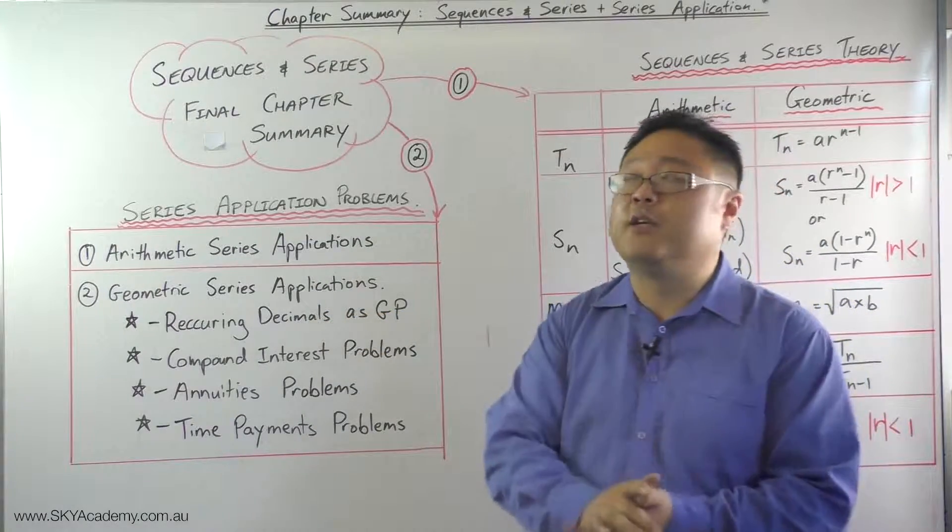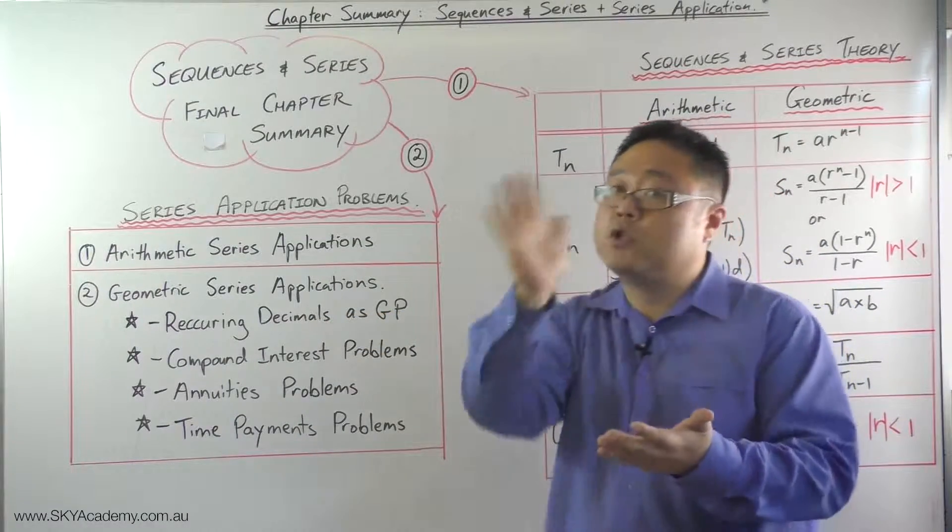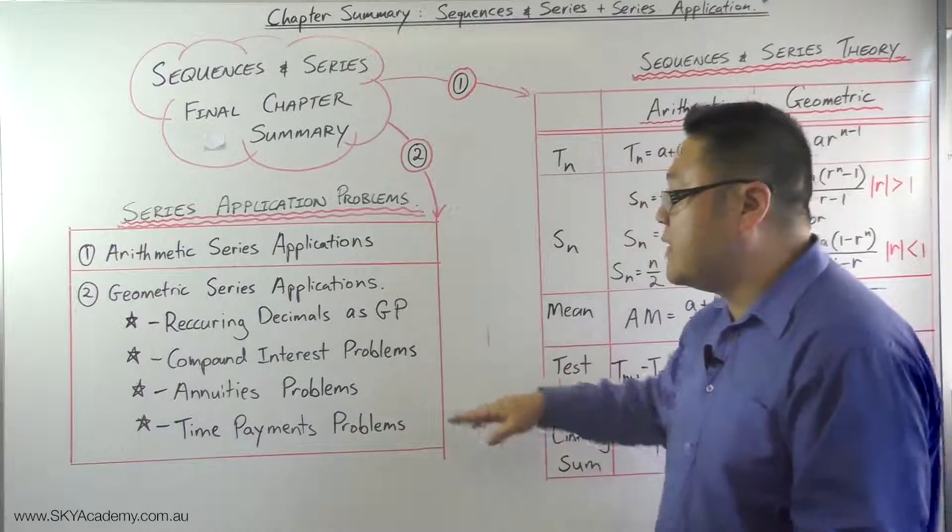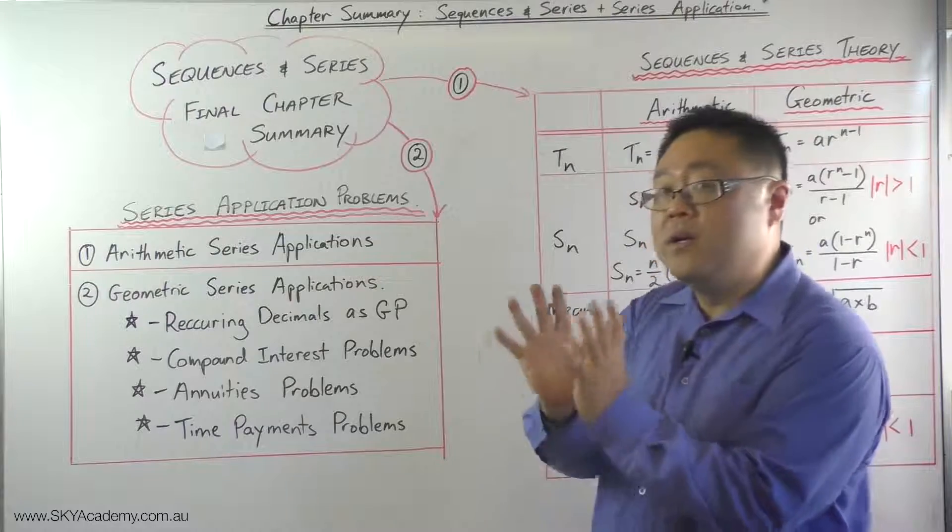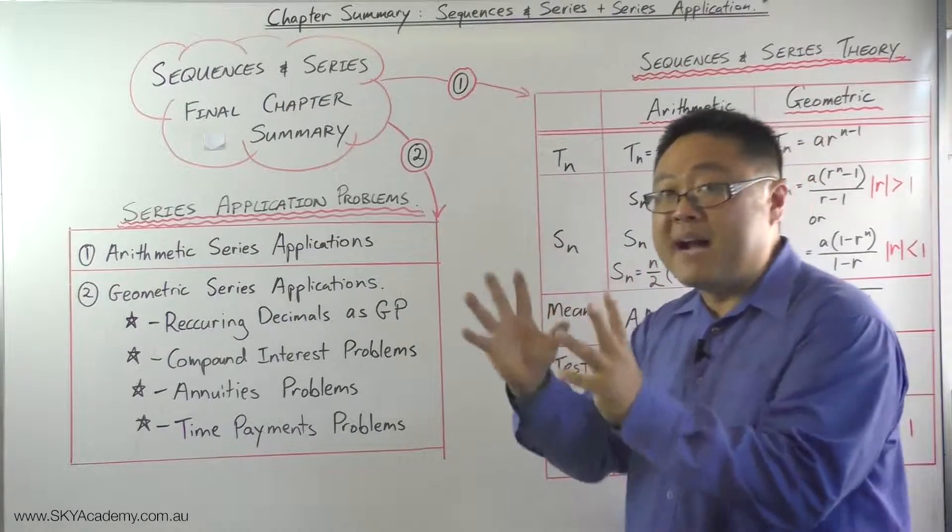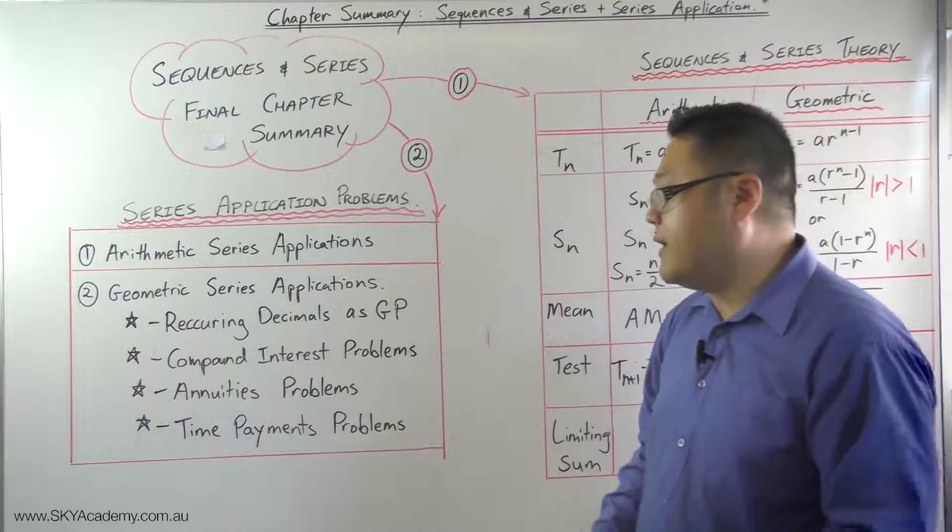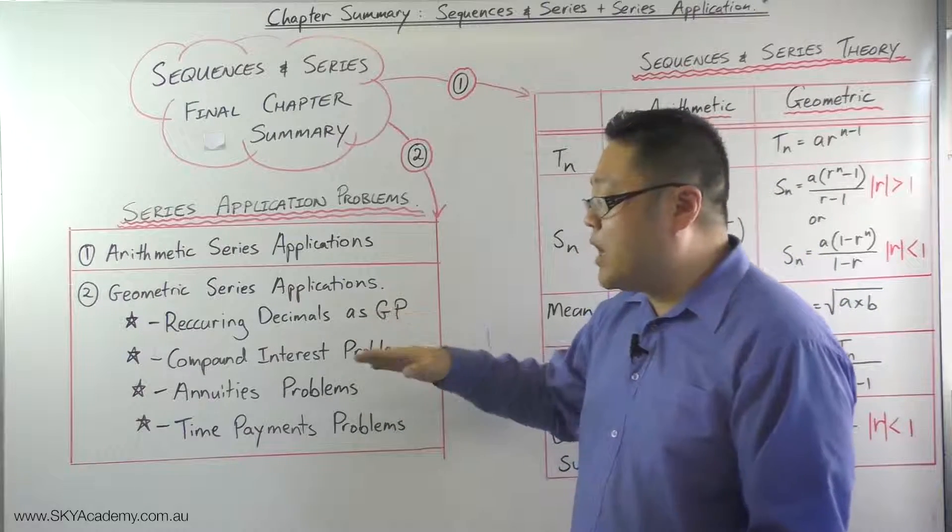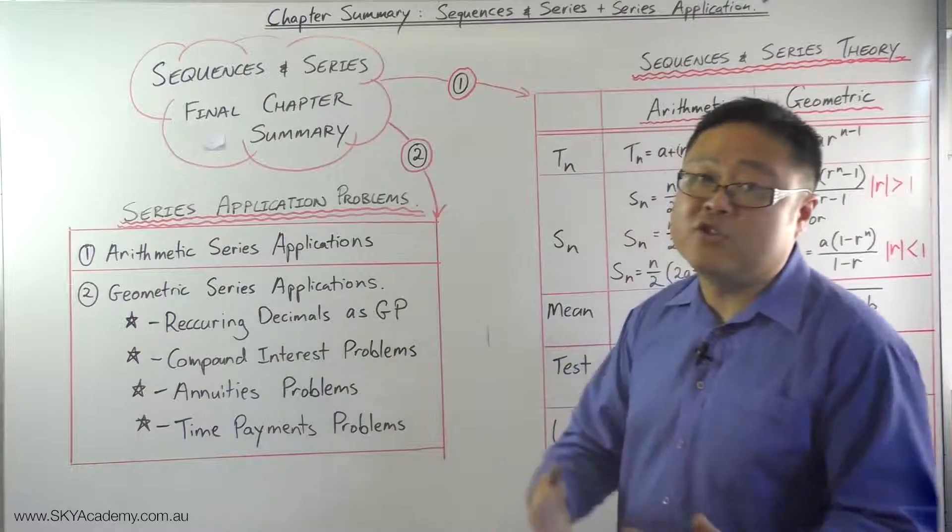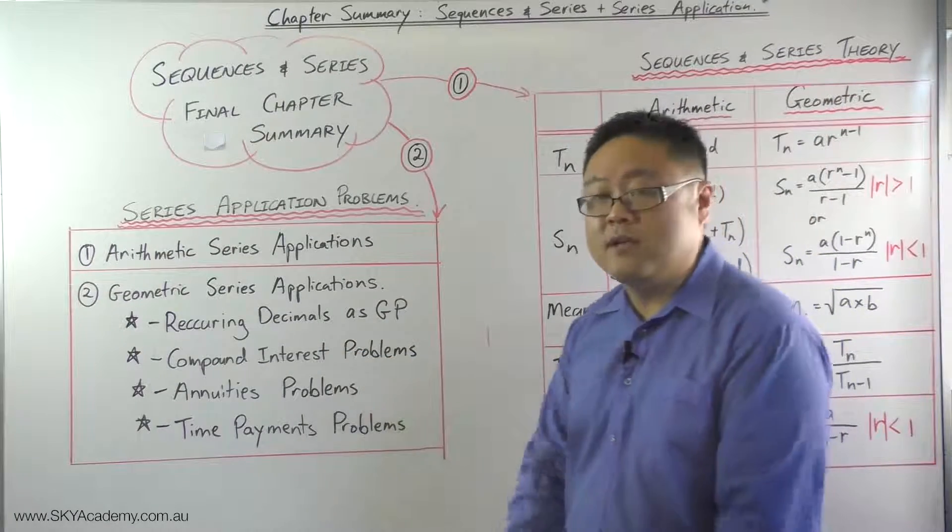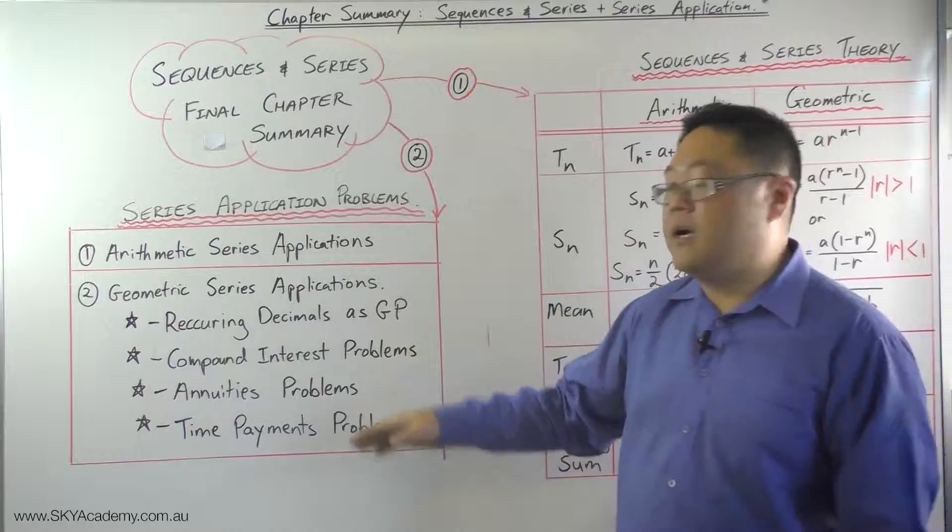The next thing that we did was apply geometric progression to finance, to money. And in particular how banks operate, and we applied it to for example compound interest formula and compound interest situations. Annuities, which are basically like—an example of an annuity is superannuation, which you actually make regular contributions into an account that then also accumulates compound interest.